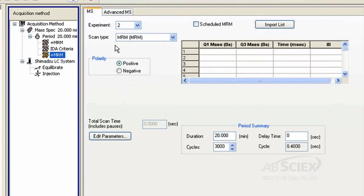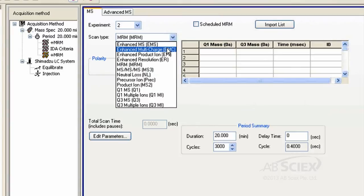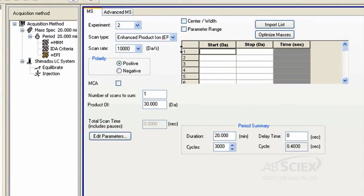Change the scan type to EPI, then specify your mass range and scan rate. Our recommended settings would be a mass range of 50 to 800 Daltons, which covers the full mass range of compounds in this method, and a scan rate of 10,000 Daltons per second to ensure fast data collection for best quality MS-MS spectra.